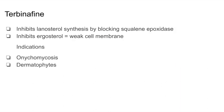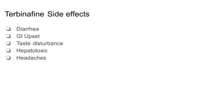All antifungals are extremely high yield for Step 2 CK and Step 3. Terbinafine inhibits lanosterol synthesis by blocking squalene epoxidase, essentially inhibiting the formation of ergosterol, which results in a weak cell membrane. Terbinafine is used in the treatment of dermatophyte infections and onychomycosis. Side effects include diarrhea, GI upset, taste disturbance, hepatotoxicity, and headaches.